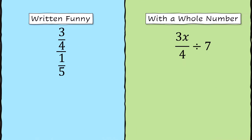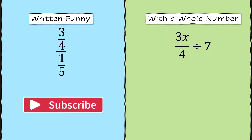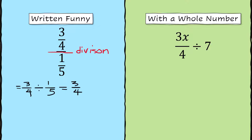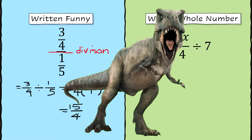Division can be written very differently — for example, 3 fourths over 1 fifth. In later courses like Algebra 2 or Precalculus, this is going to be called a complex fraction. Just remember that that operator is division. It's 3 fourths divided by 1 fifth. So you do the same thing: flip the second fraction and multiply. We get 15 fourths again. It's just written in a way that's very intimidating.